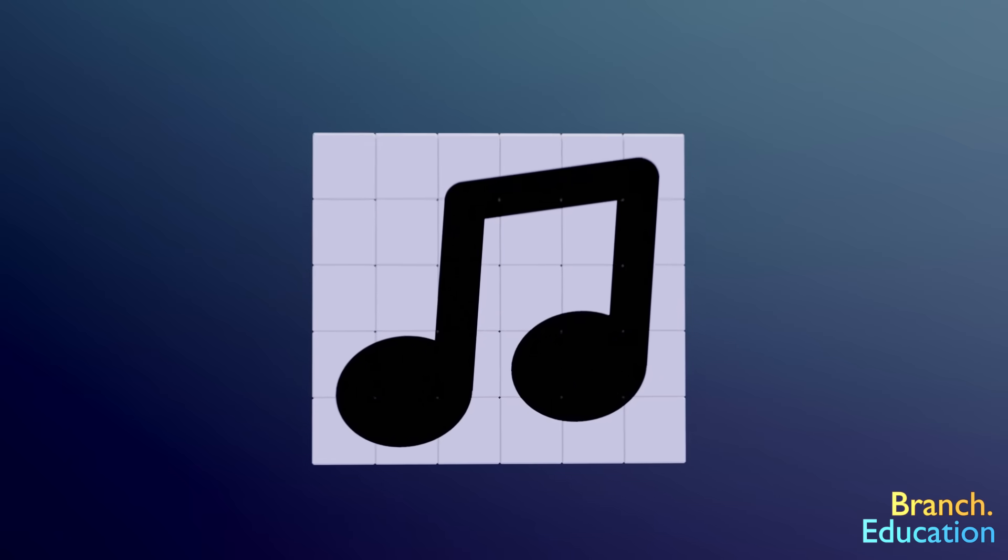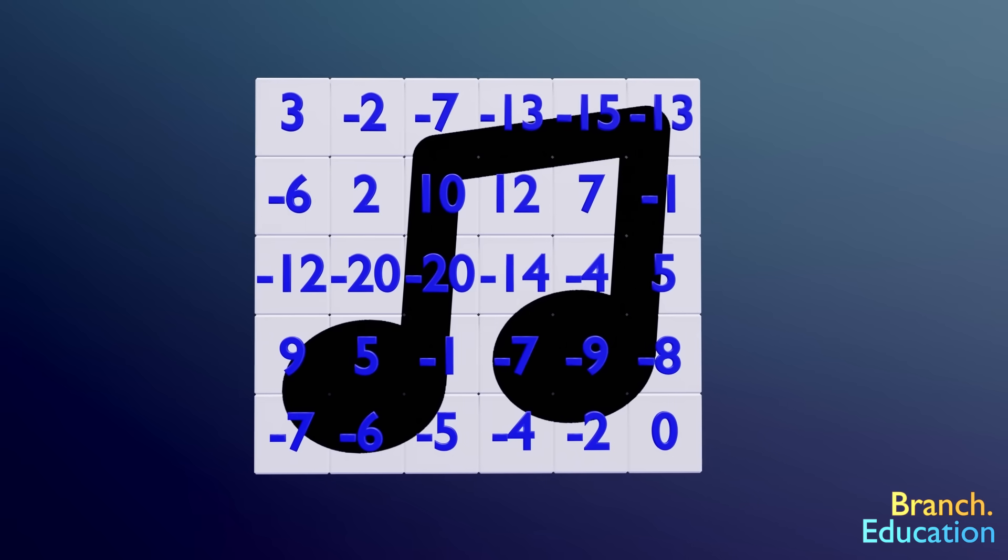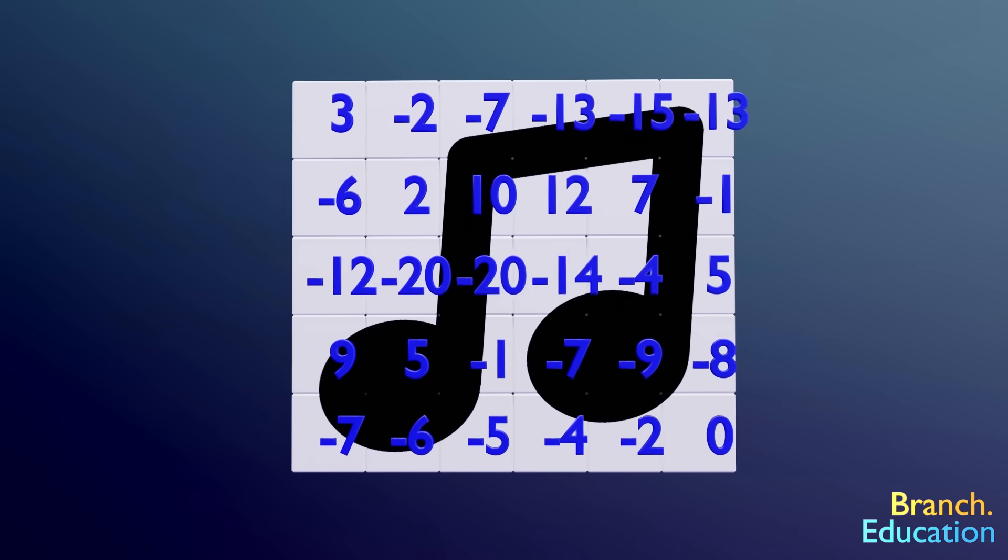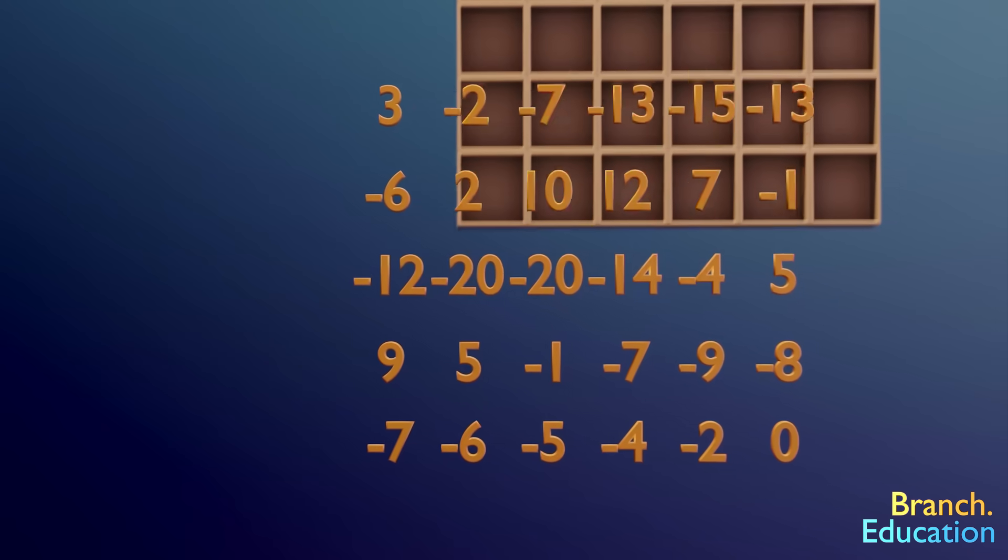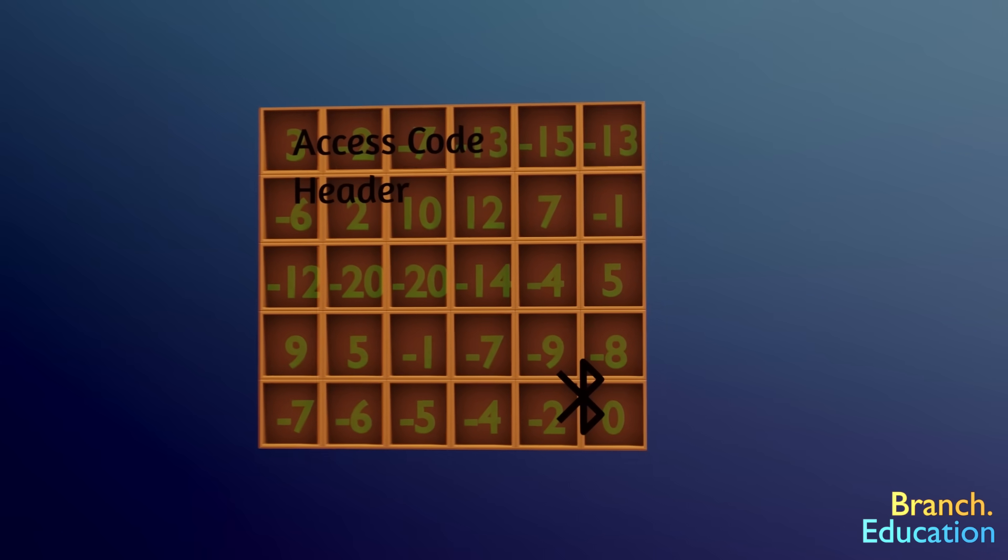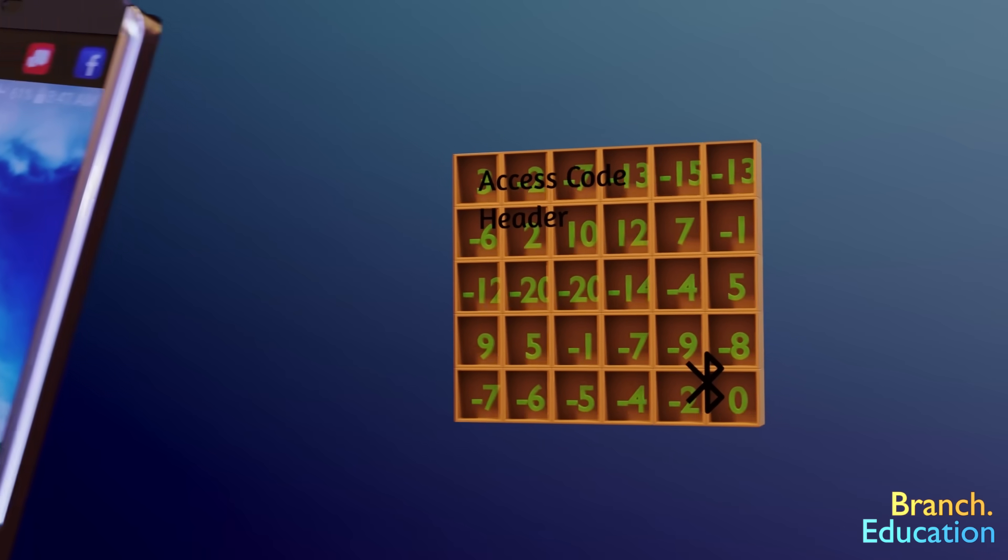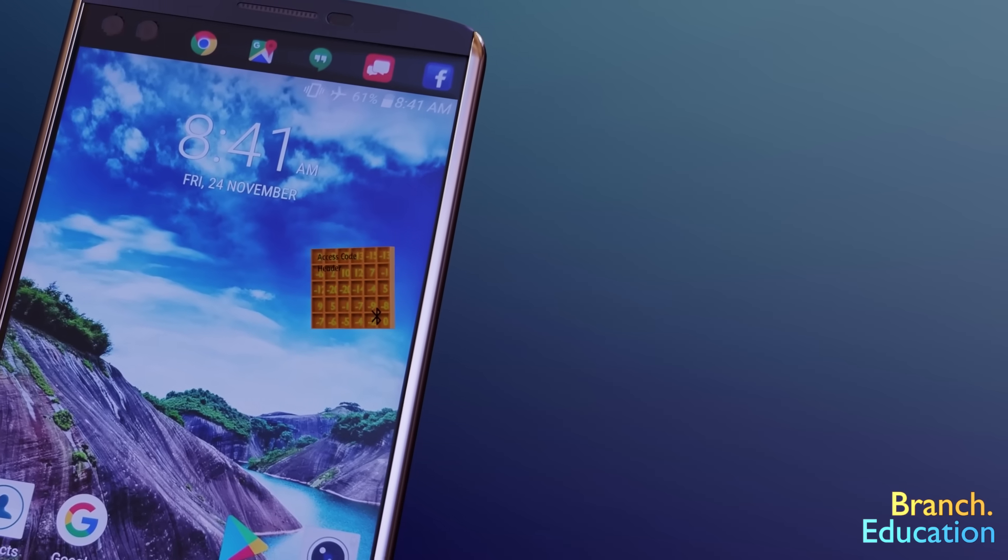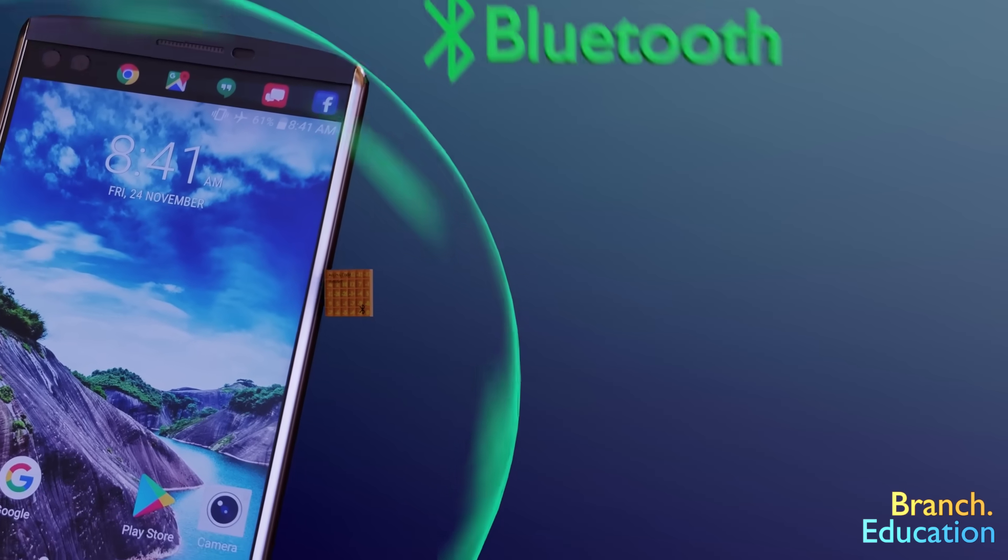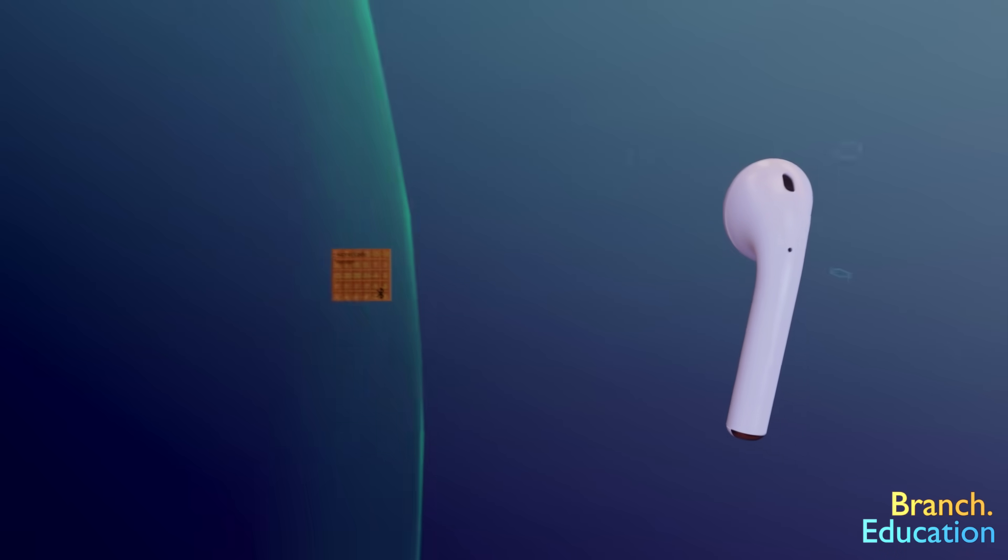This audio is represented digitally as a long set of numbers. And in order to send it to your earbuds, your smartphone compresses and divides the information into packets according to Bluetooth specifications. Next, your smartphone converts these packets into electromagnetic waves or photons and sends the data to the earbuds over the Bluetooth connection.